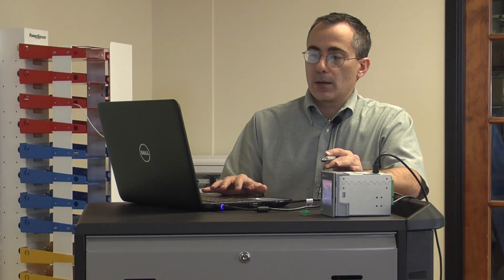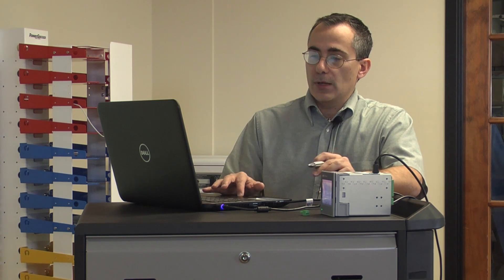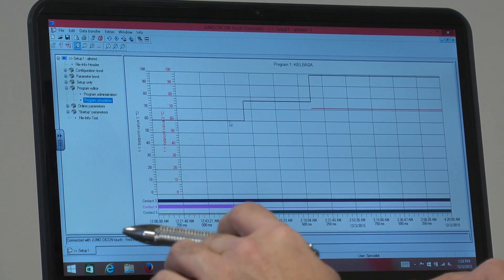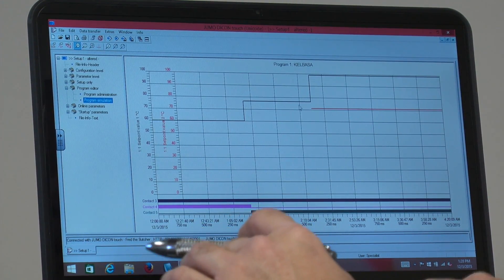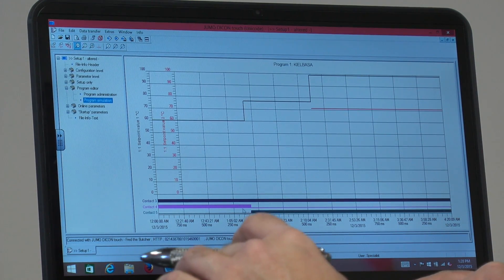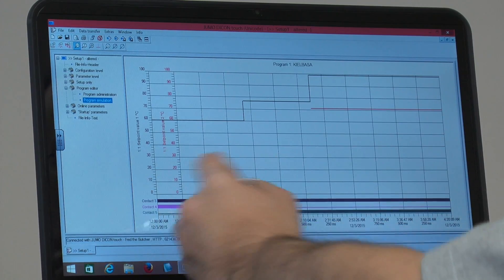There's another useful feature that it has, this ability to simulate the program so you can see if your recipe isn't really what you imagined in your mind when you were setting it up. And you can also see at which points in time the different relays will be triggering down here at the bottom.